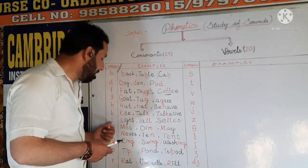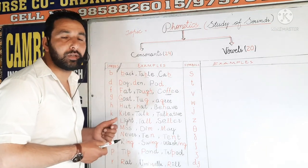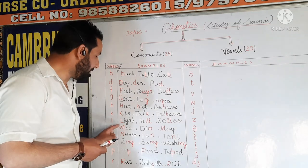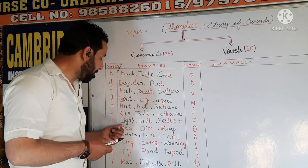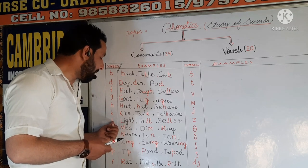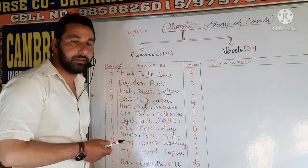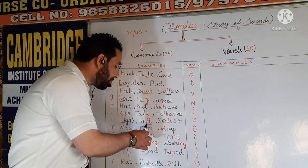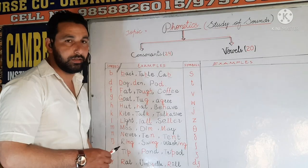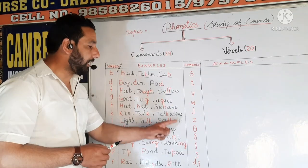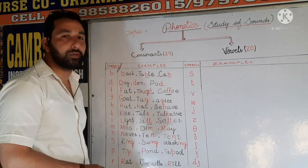And the next is L. It looks like L but has the sound of L. For example, we have 'light' — the sound we produce here is the sound of this symbol L. Next is 'tall' — instead of these two L's, we have the sound of this L. Next is 'seller' — instead of these two L's, we have the sound of L.